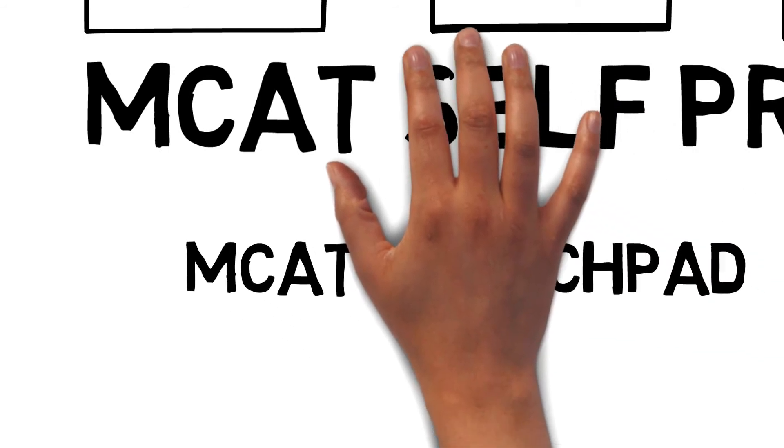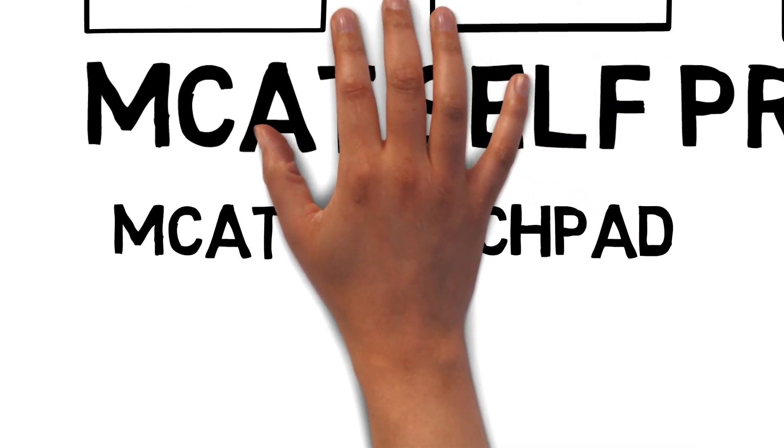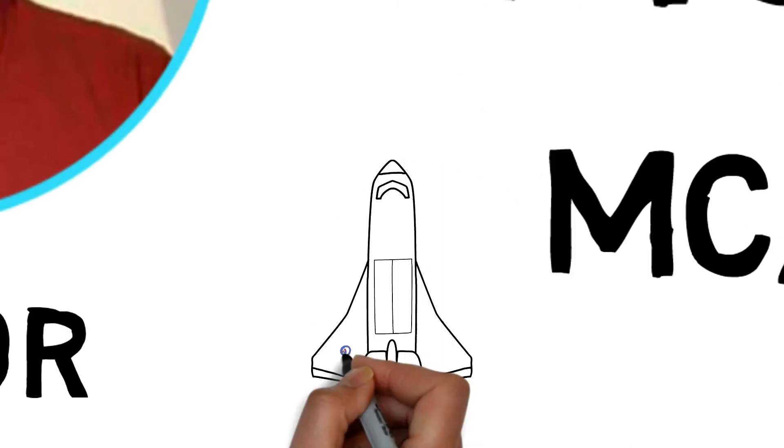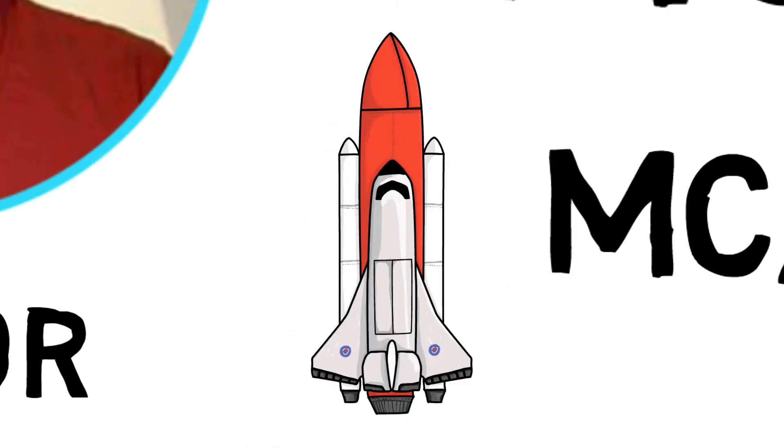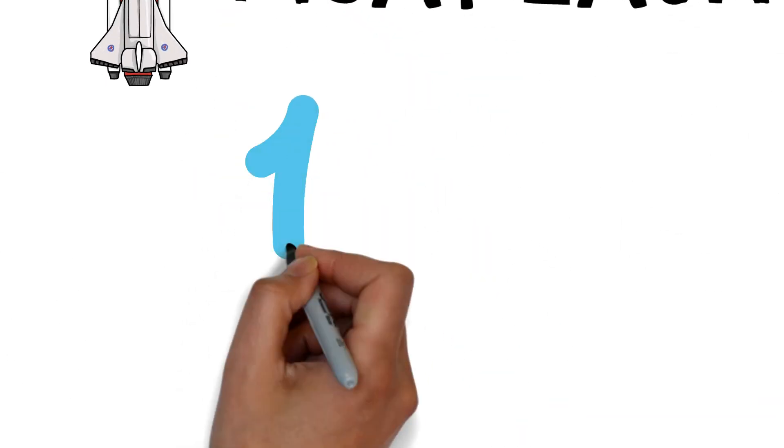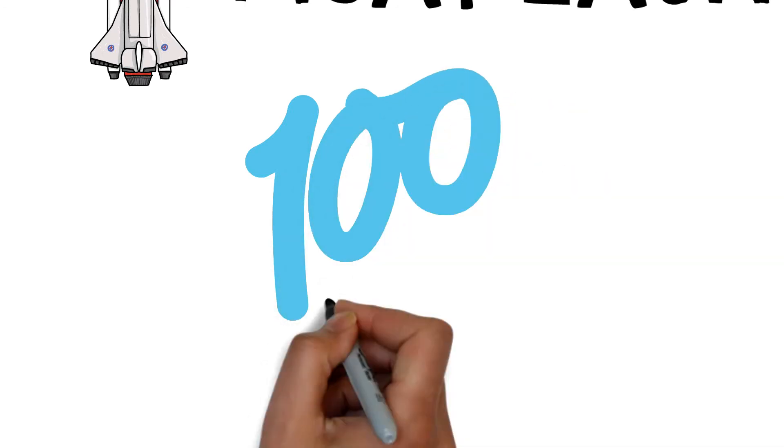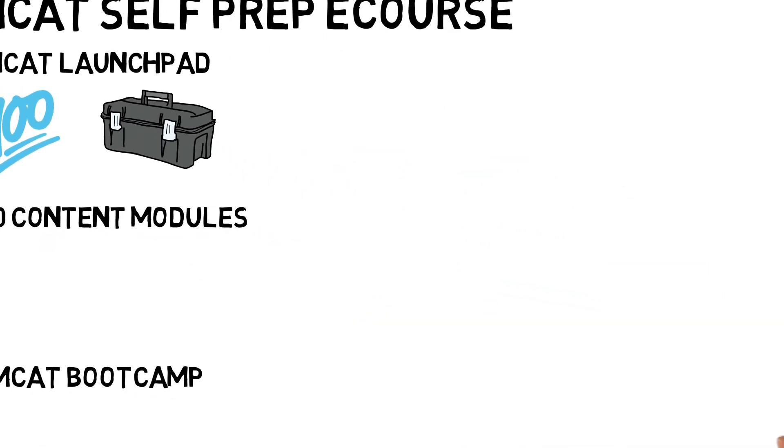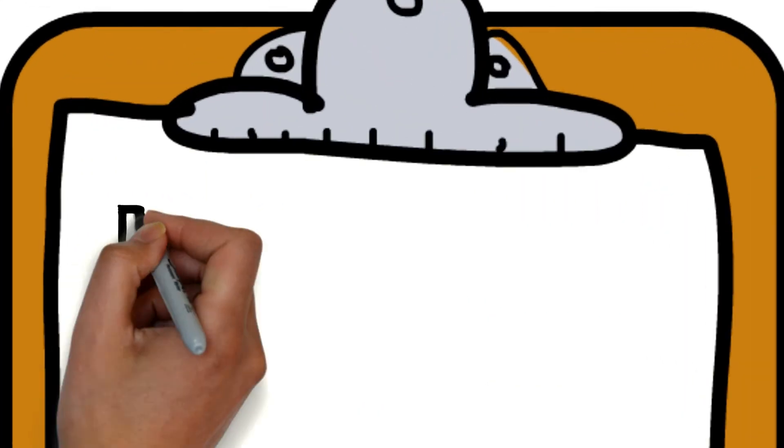The MCAT Self-Prep eCourse is neatly organized into 12 study modules, including MCAT Launchpad, the 10 content modules, and MCAT Bootcamp. During the first module, MCAT Launchpad, you will learn how I and many others have achieved top MCAT scores. You will also discover all of the tools and resources contained in our eCourse. Lastly, you will take your first diagnostic exam.